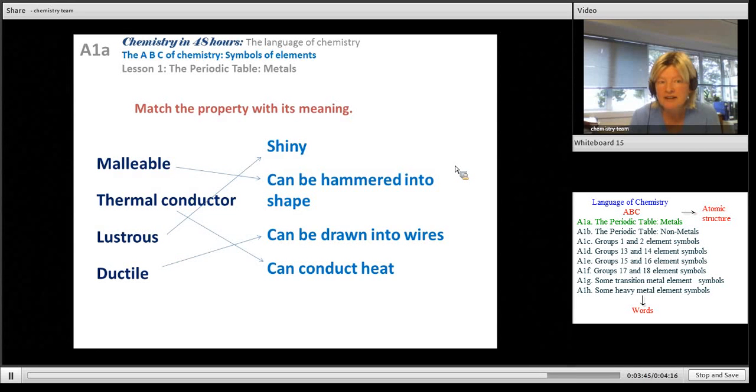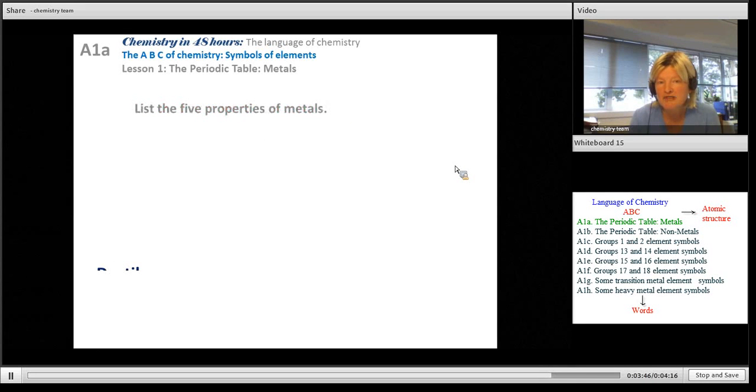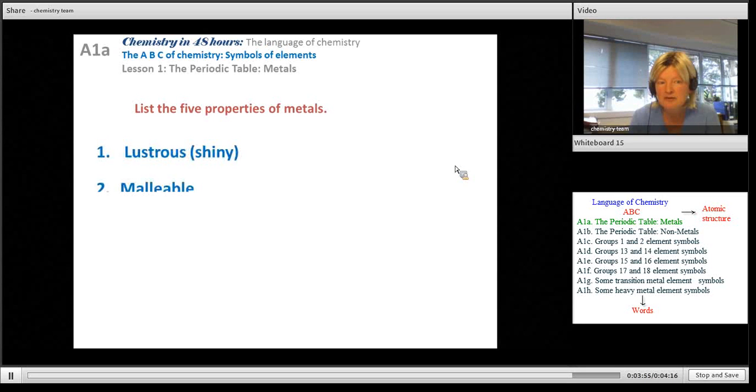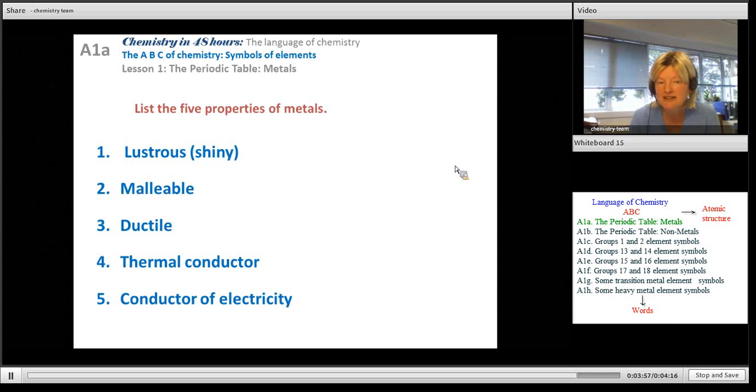So some more practice. List the five properties of metals, so pause the video and see if you can do that. Here are the answers, did you get them right? Lustrous, malleable, ductile, thermal conductor and conductor of electricity.